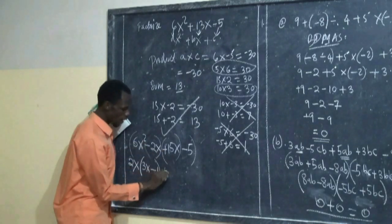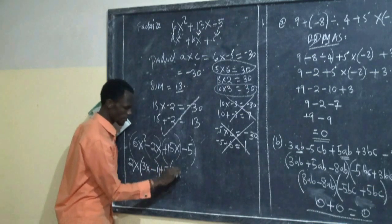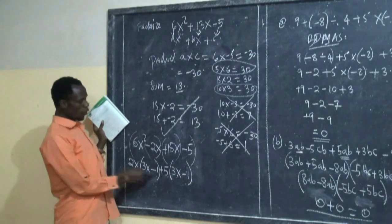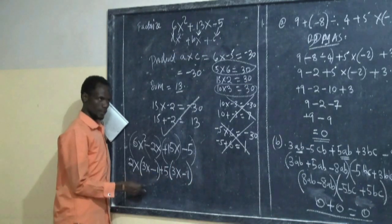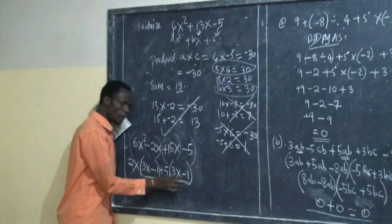Then you take your 5 outside, that is supposed to be 5. Then here you have left is 3x negative 1. Now if you look at here, you find these terms which are found in the bracket are common.